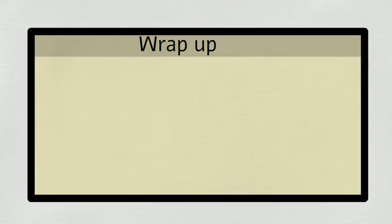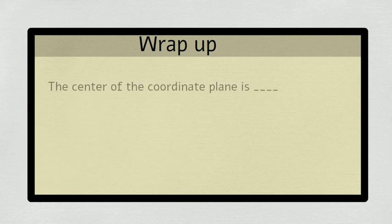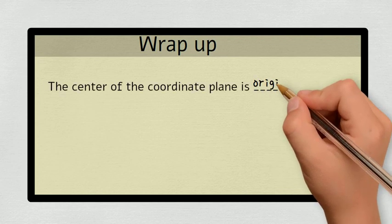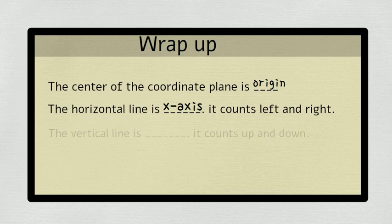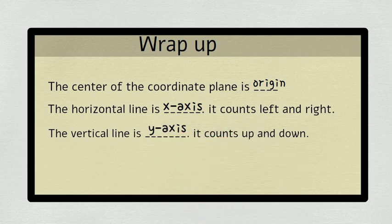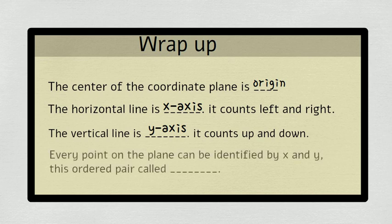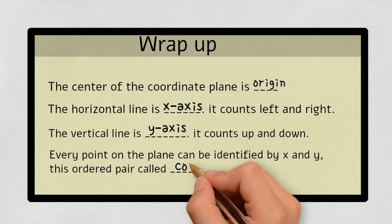Okay, let's wrap up. The center of the coordinate plane is origin. The horizontal line is x-axis. It counts left and right. The vertical line is y-axis. It counts up and down. Every point on the plane can be identified by x and y. This ordered pair is called coordinates.